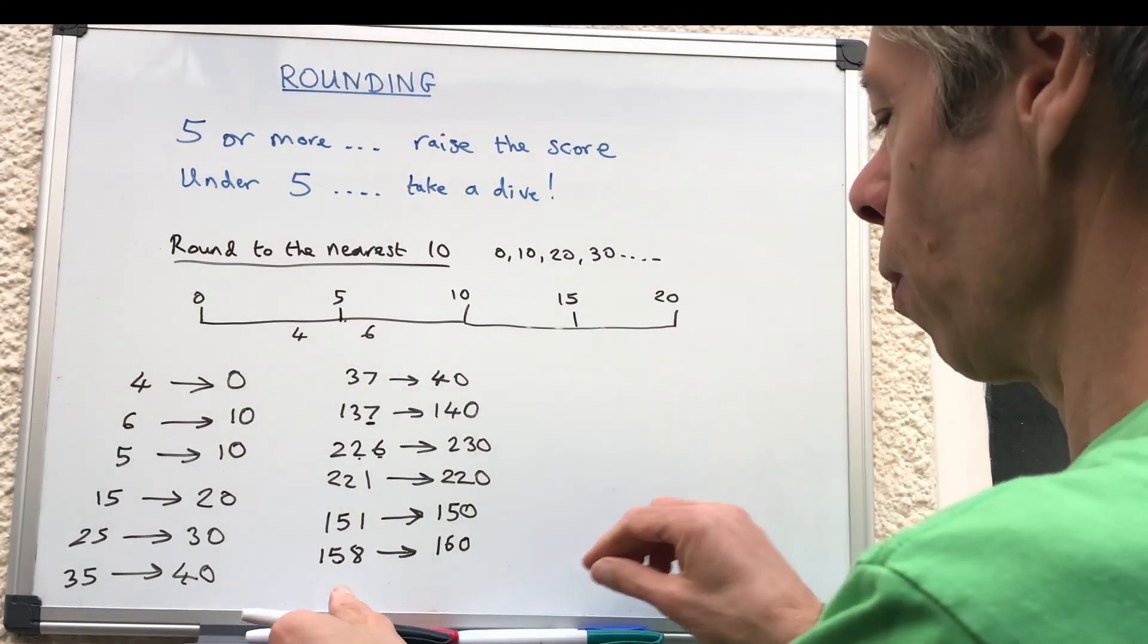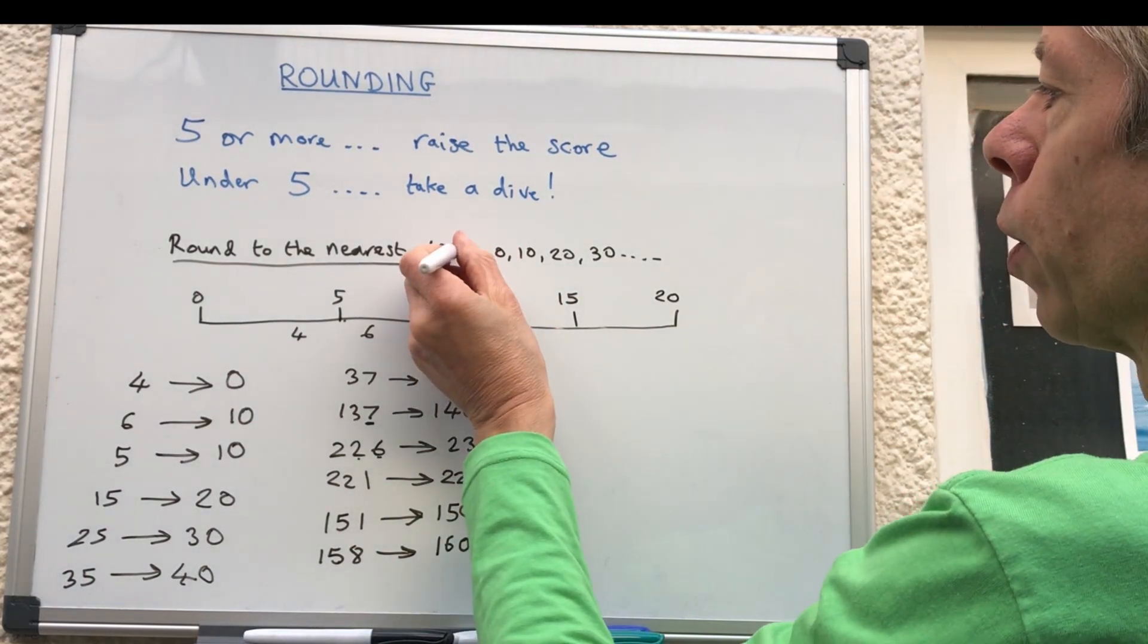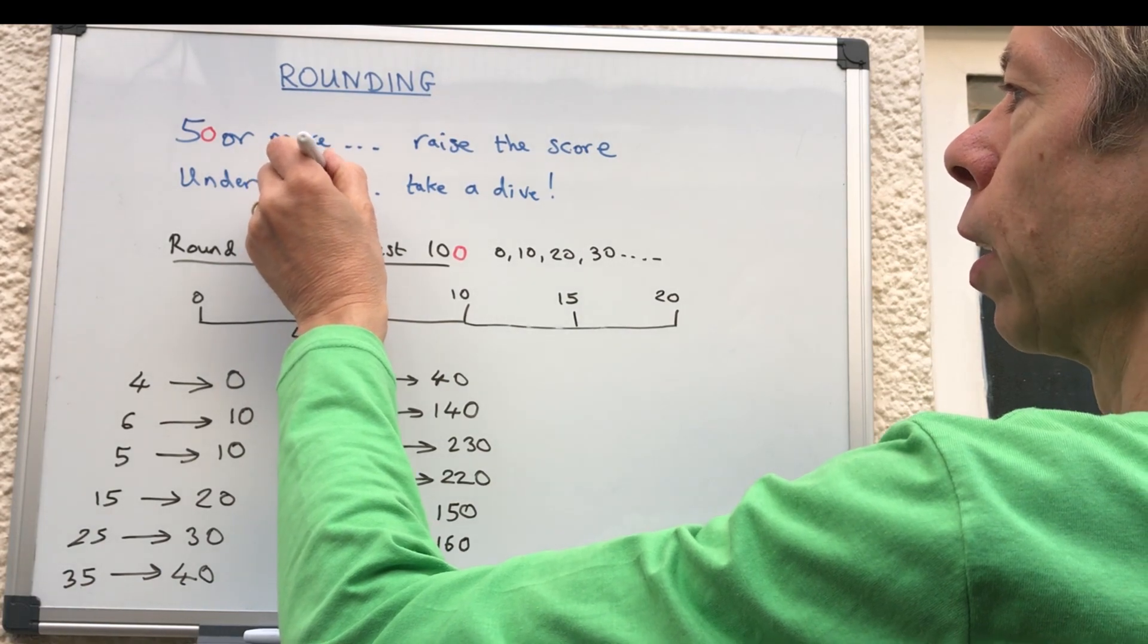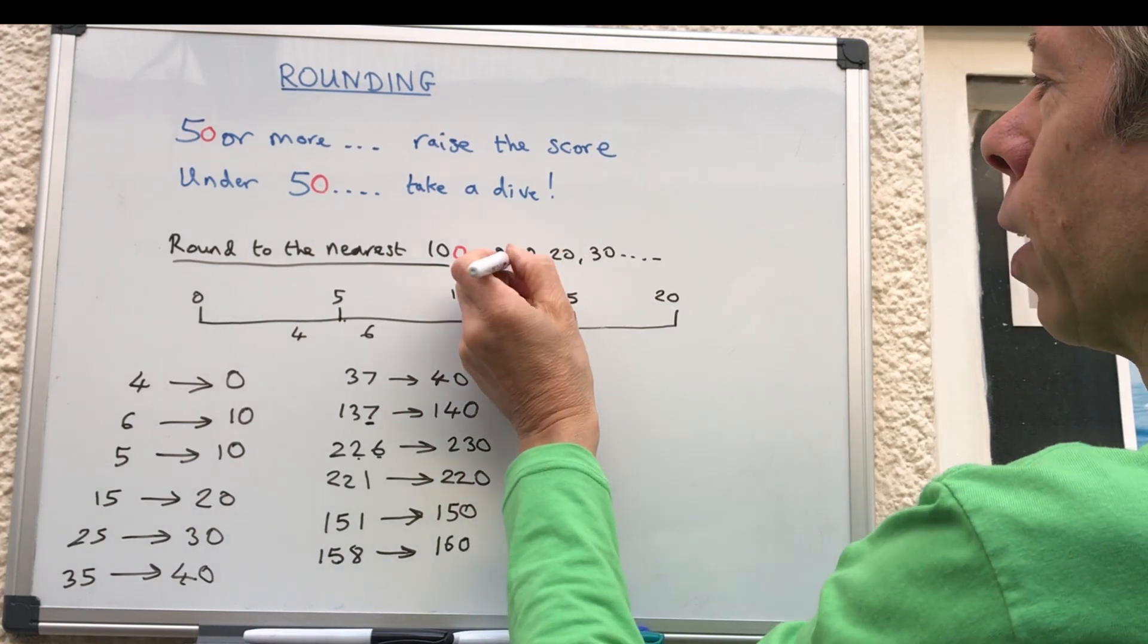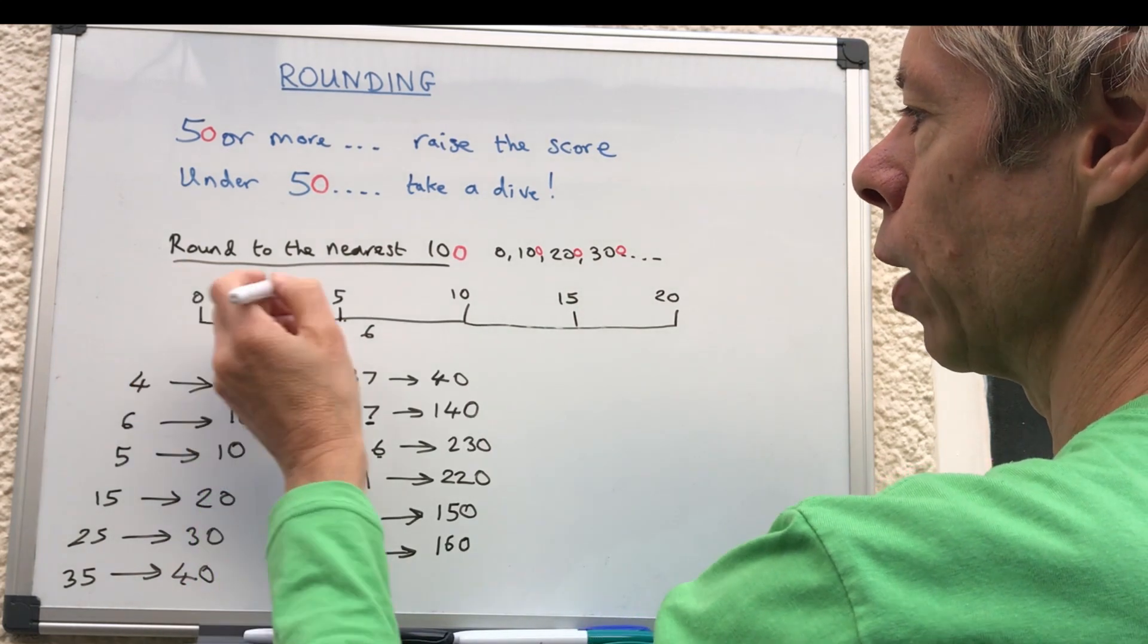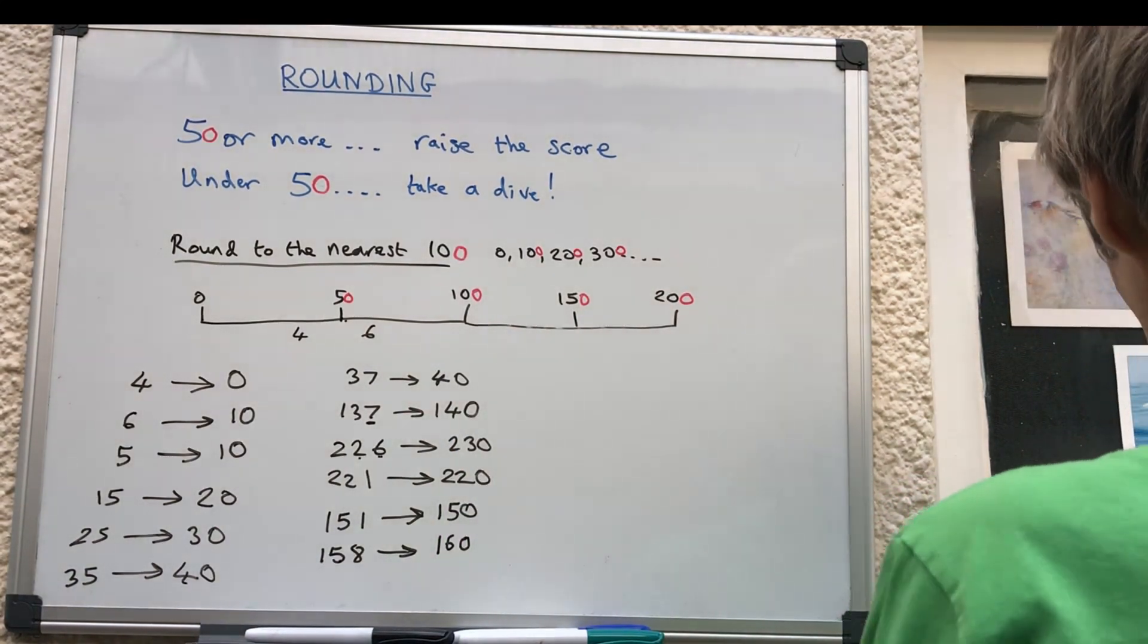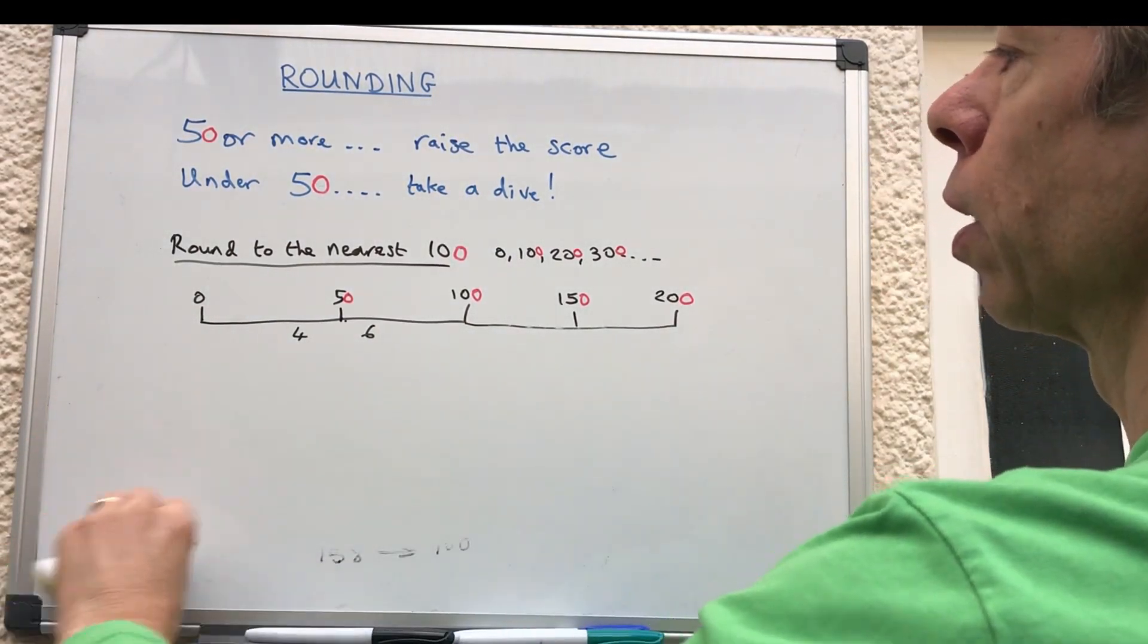So if we were doing rounding to the nearest 100, it would be 50 or more raise the score, and then it'd be under 50 take a dive, which doesn't rhyme, but never mind. So obviously the nearest hundred would be 100, 200, 300. That would then become zero, that would stay zero, that would then become 50, that would become 1000, that would be 150, that would be 200. So let's get rid of those and do some rounding to the nearest hundred.